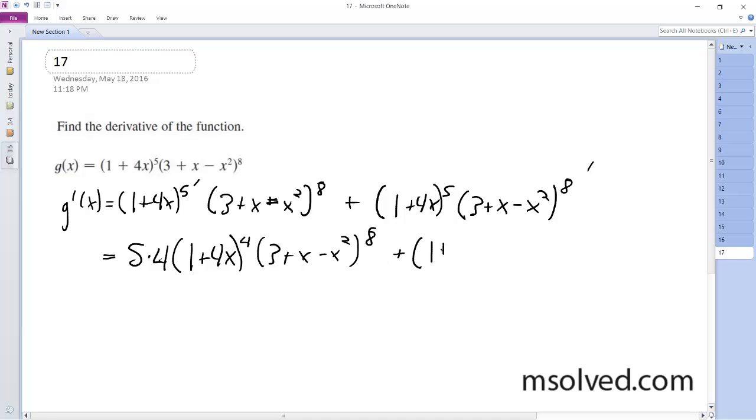And then over here, 1 plus 4x raised to the 5th, and then we have, hold on, I'm going to take the derivative of it on the inside, so times quantity 1 minus 2x times 8, because that's bringing the exponent down.